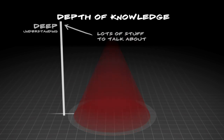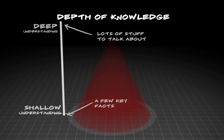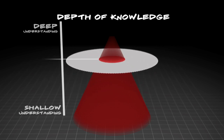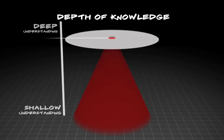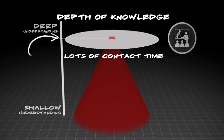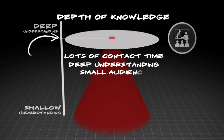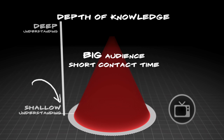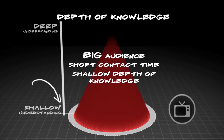Now let's go to depth of knowledge. There's also a range of how much interesting stuff you can talk about, from a deep understanding of your research to covering just a few key salient points. Bigger audiences with limited contact time only allow for a more shallow understanding of your work. As your audience size shrinks, your contact time increases and the amount you can cover increases as well. More focused group learning, like in a classroom or lecture, offers lots of contact time and lots of depth, but smaller audience size. TV and radio programs have a big audience, short contact time, and shallow depth of knowledge.